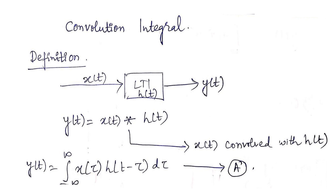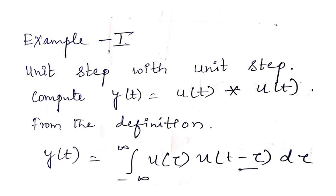From this definition, let us take a small example: computing the convolution of a unit step with a unit step — both signals in continuous time domain. So y(t) = integral from minus infinity to plus infinity of u(τ) · u(t − τ) dτ, replacing x and h with unit steps as per the definition of the convolution integral.